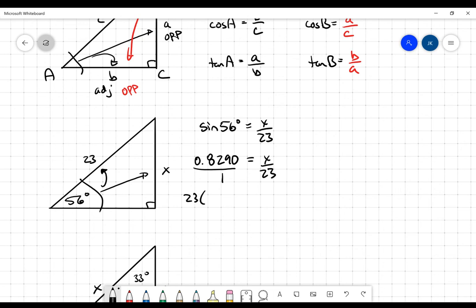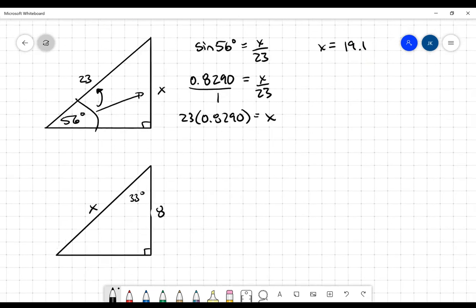Put that over 1. We'll cross multiply. And then I'll go to my calculator and evaluate that. And I'll get that it's going to be 19.1 units, whatever those units happen to be. But the issue here is that I was able to identify what trig ratio that was.